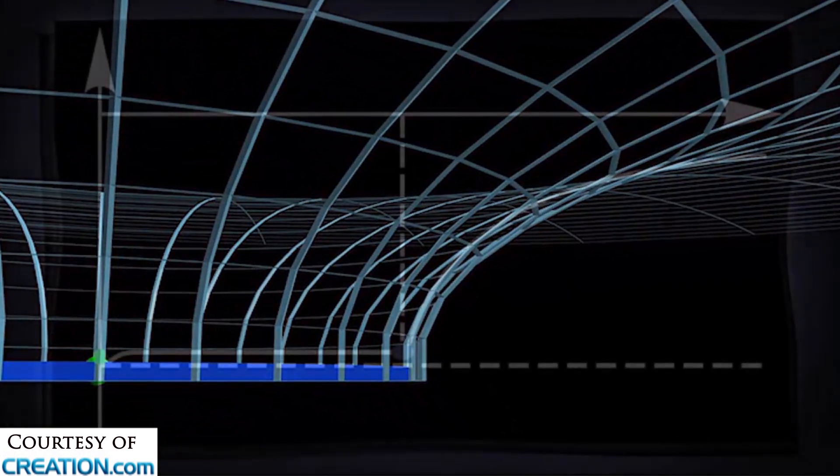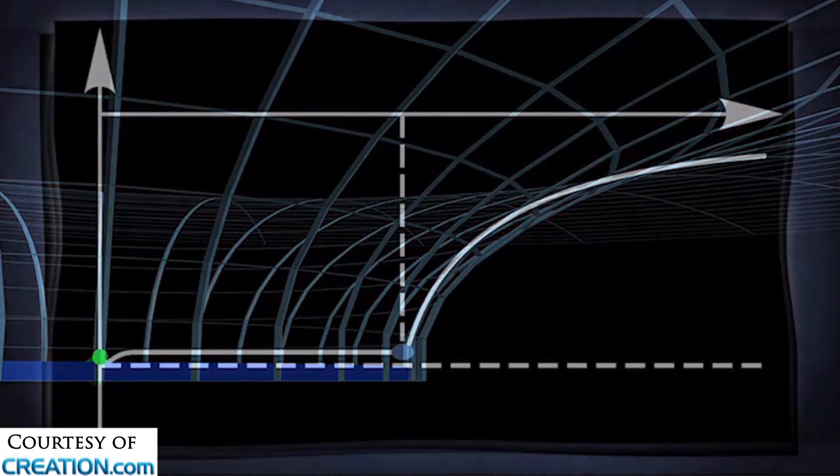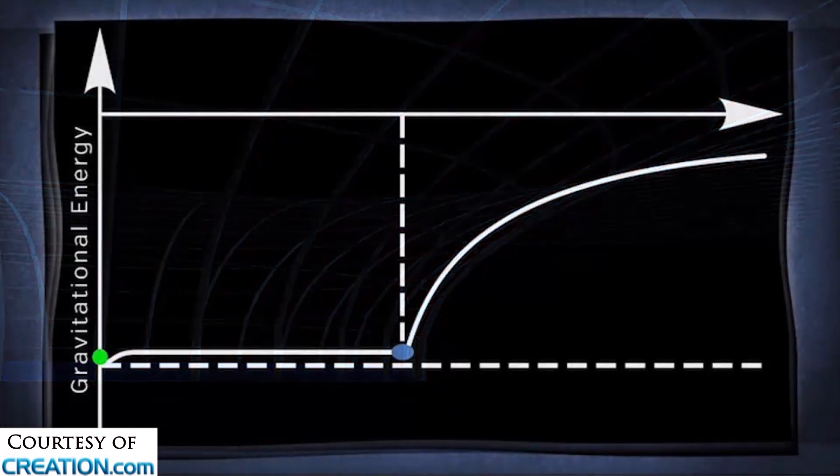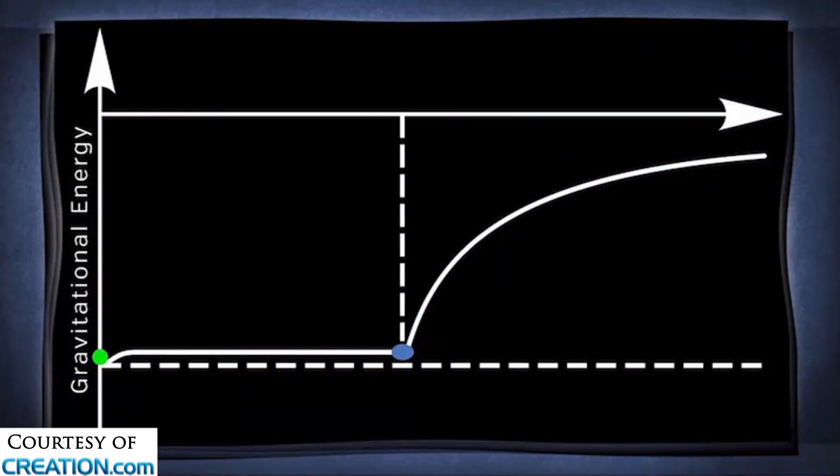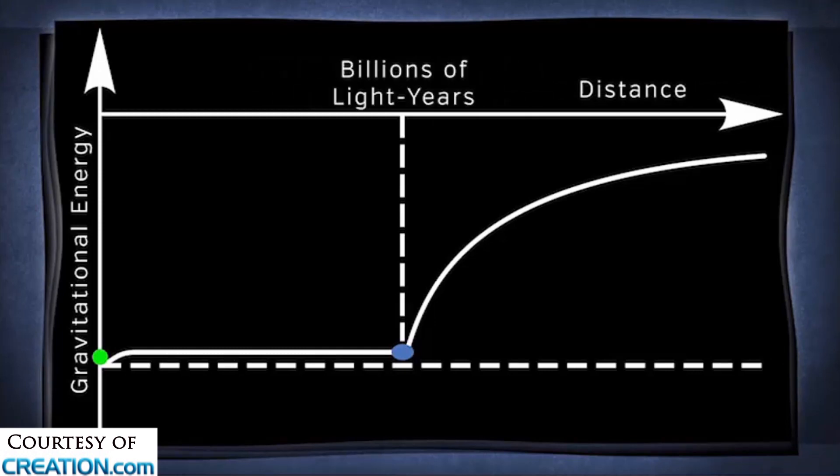The vertical direction is gravitational energy, and the horizontal direction is distance away from the earth, and you see a point at the distance away from earth, which is billions of light years, dropped down on the dotted line, and you see a little slice there that says that's a section of the waters above that are making the dent in the trampoline.